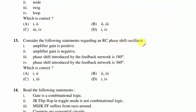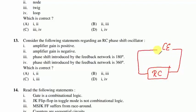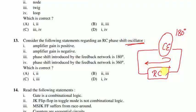Question 13: in an RC phase shift oscillator, a common emitter configuration provides 180° phase shift. For oscillation, total phase shift must be 360°. The feedback network provides a further 180° phase shift; amplifier gain is negative. In amplifier design you use negative feedback, but in oscillator design you use positive feedback. Phase shift introduced by feedback is also 180°, so statements 2 and 3 are correct — option B follows.